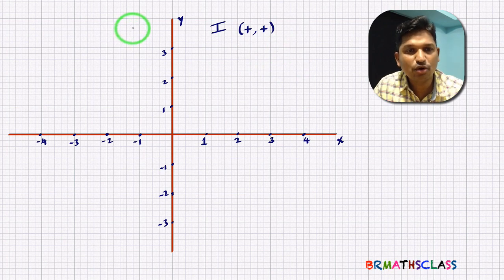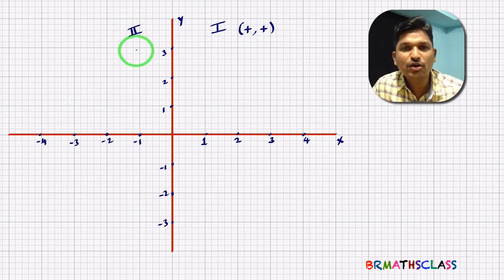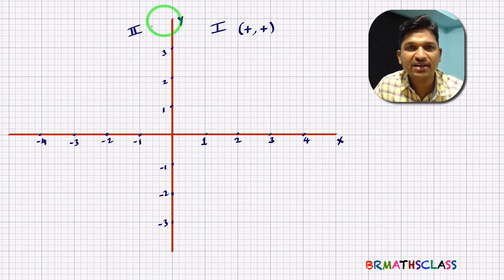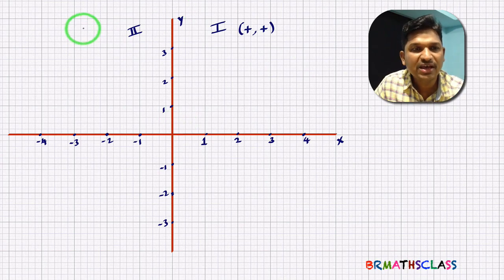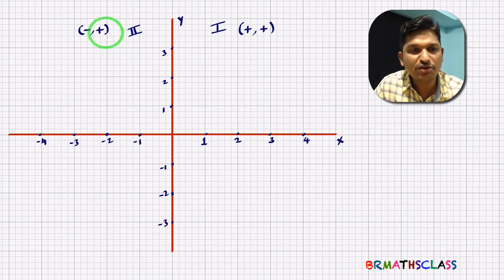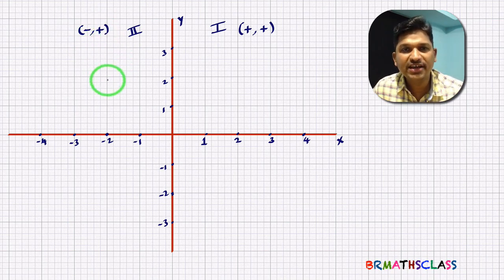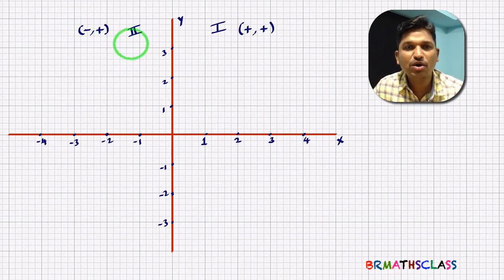The second quadrant is formed with the negative x-axis and the positive y-axis. That's why its x-coordinate is negative and its y-coordinate is positive. In the second quadrant, x-coordinate is negative and y-coordinate is positive.